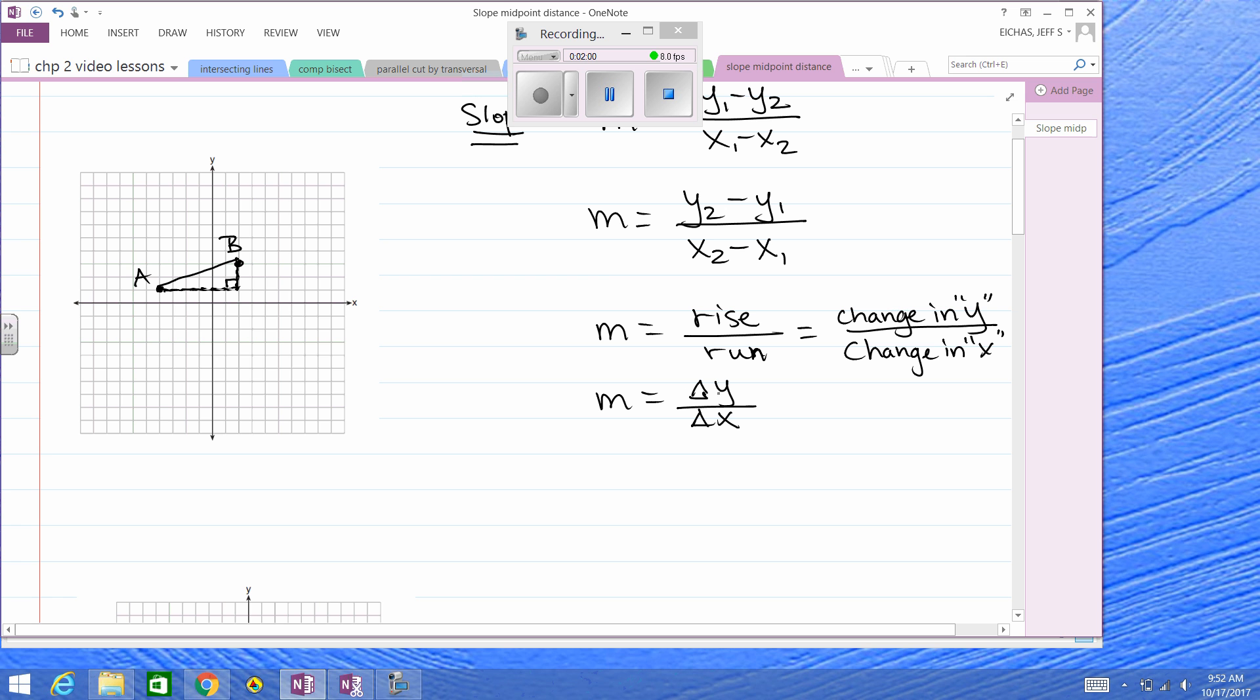So the rise is the change in y, the up and down, which in this case is 2. The change in x is this distance across, 1, 2, 3, 4, 5, 6. Okay, so for AB, for segment AB, we're going to say the slope is going to be 2 over 6.